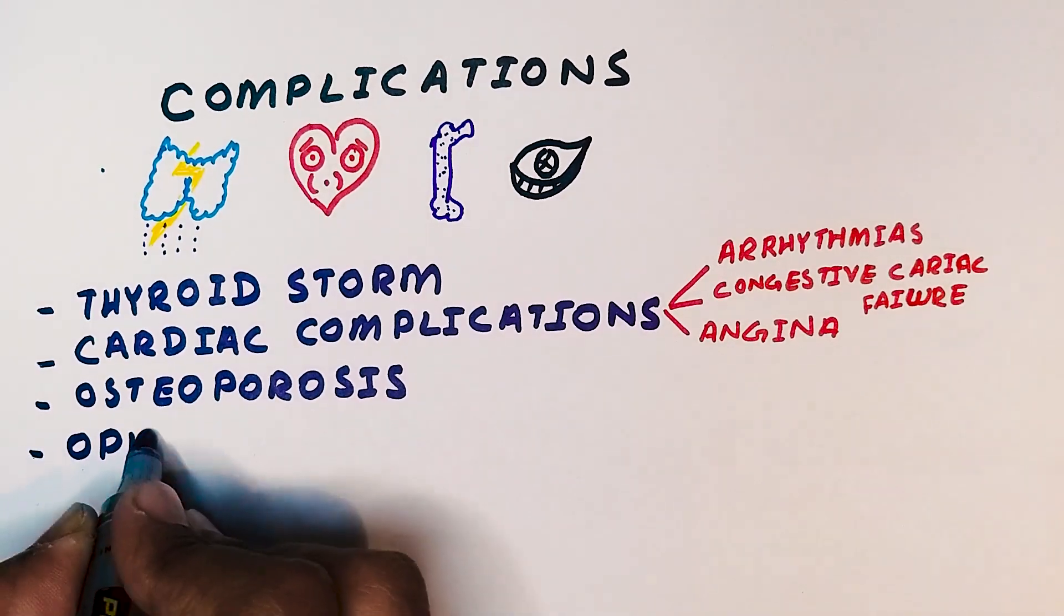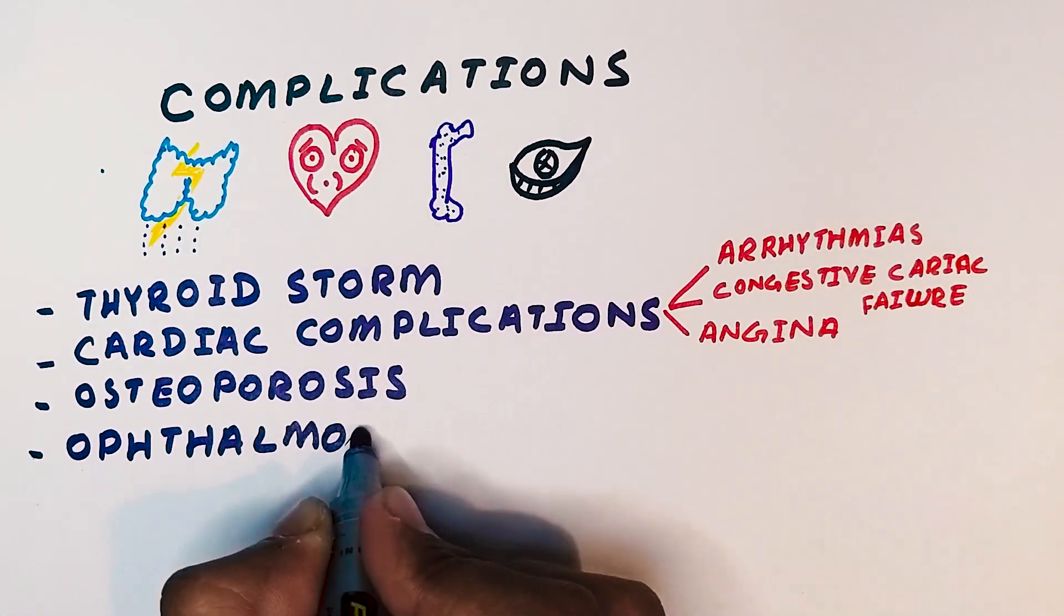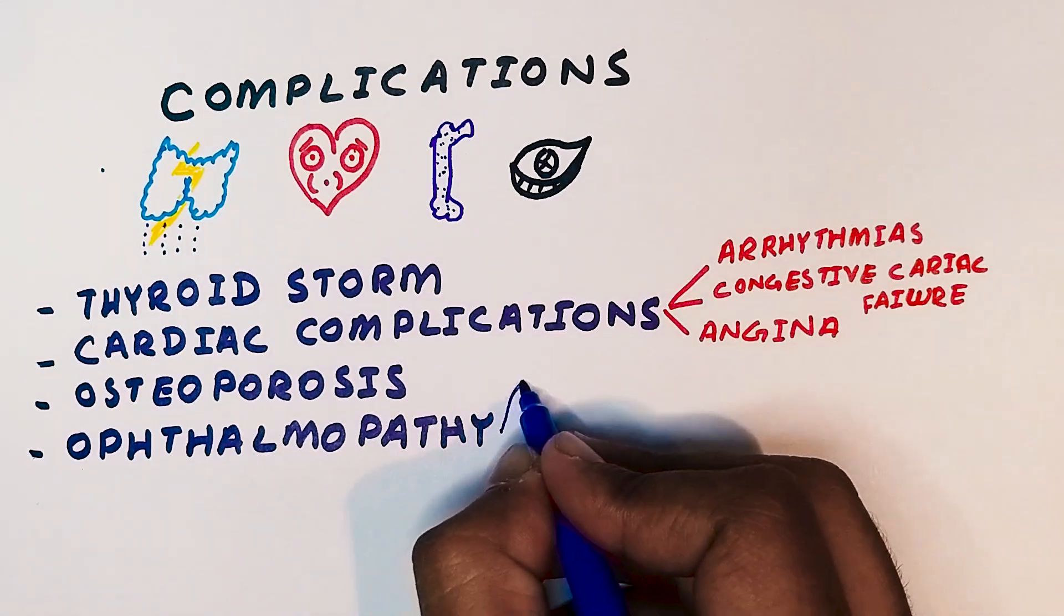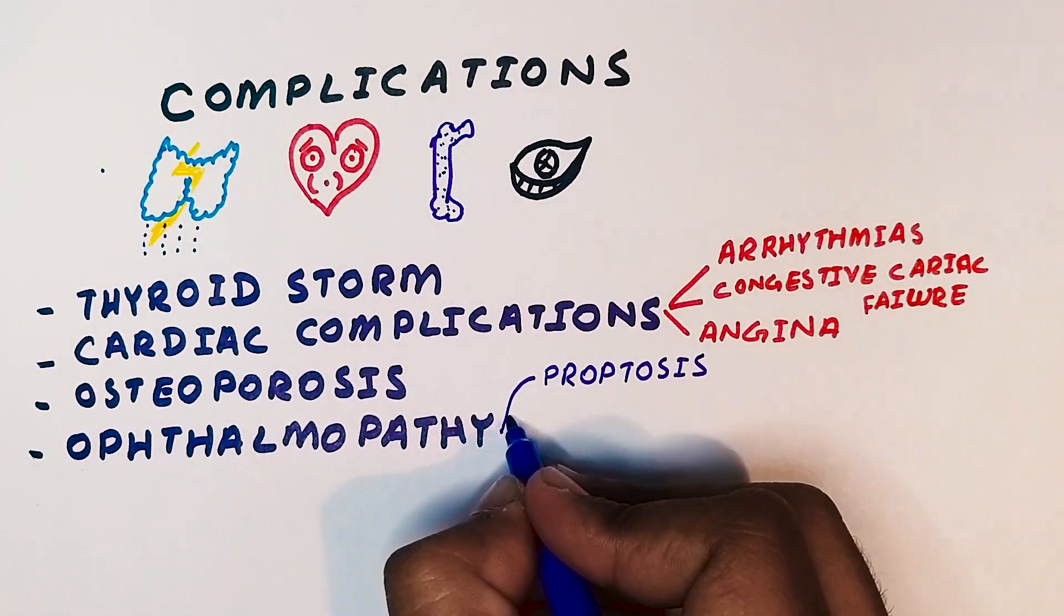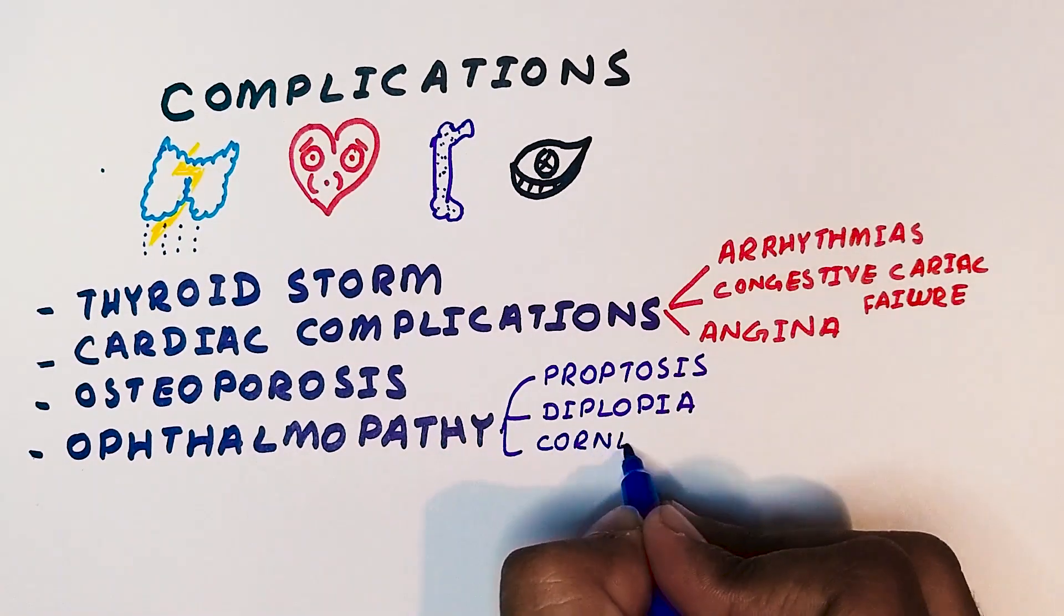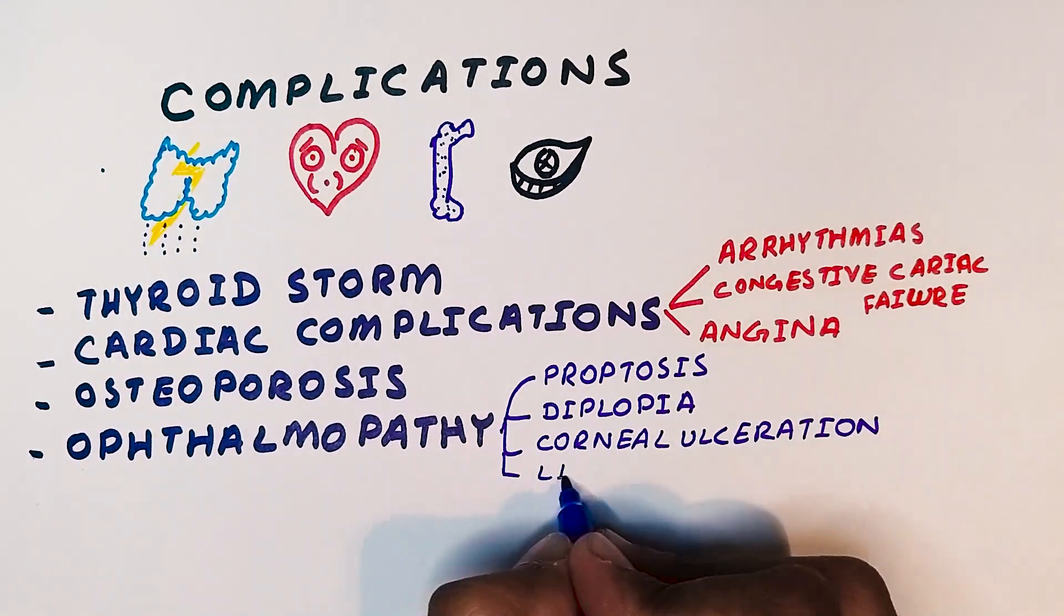In cases mainly associated with Graves disease, the patient can have ophthalmopathies, which can manifest as proptosis, which means that the eyeball slightly protrudes out of the eye socket, diplopia, commonly known as double vision, and corneal ulceration due to dryness of the corneal layer and lid lag.